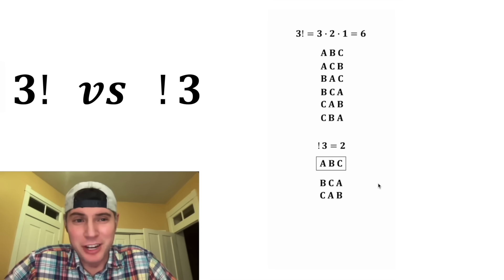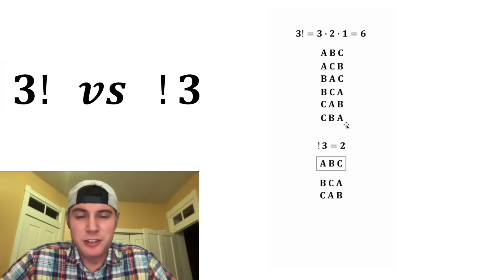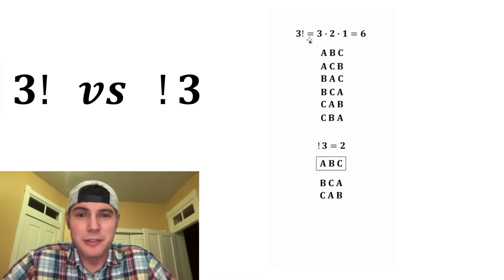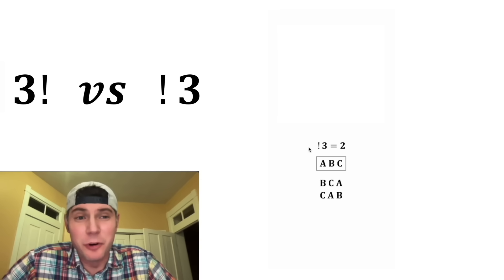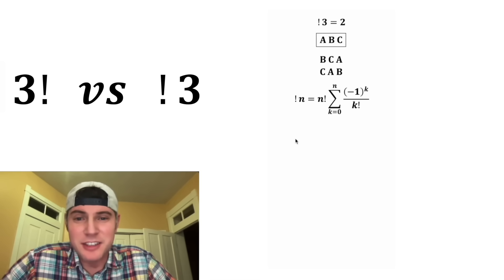And the word for this is derangements. Three objects have two derangements. So that's the difference between a subfactorial and a factorial. There is a formula for this if you want to see that. It's this right here.